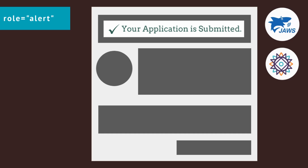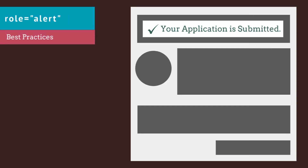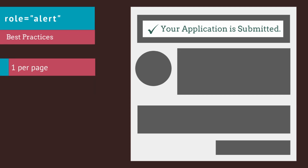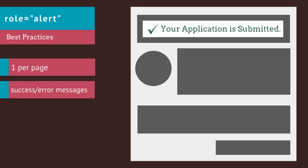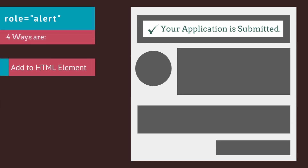Because of its intrusive nature, role alert must be used cautiously and only in situations that demand immediate user attention. One key callout: the screen reader will interrupt the current announcement and immediately announce the new alert message. The best practice is to use only one role alert per page, because assistive technologies will announce the last visible element having role alert.